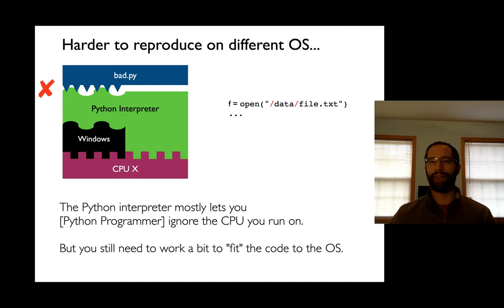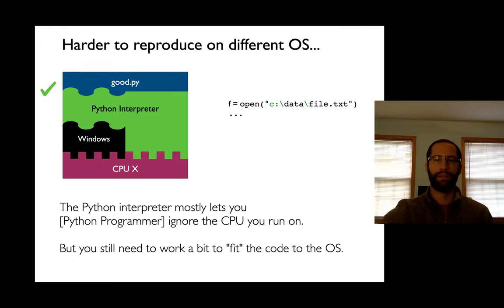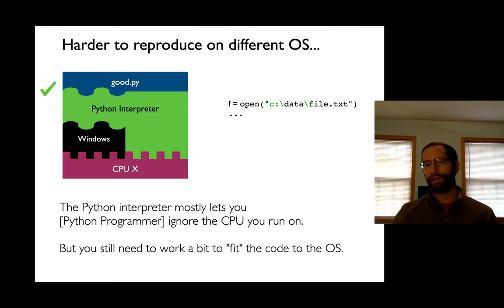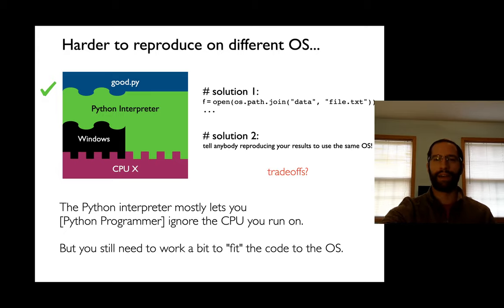You've all seen examples of that. On the right, I have f equals open forward-slash data forward-slash file.txt. That won't work on Windows, but it will if I change it to backslashes. So you have to worry about how to fit your code to the operating system — it's very easy to write things that aren't reproducible. Some of you are probably remembering how to fix this issue: that's with os.path.join. You just call this, and it will use the right slash for you. That's a good solution — you should write your code that way.